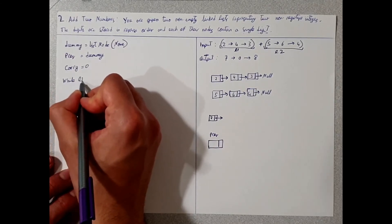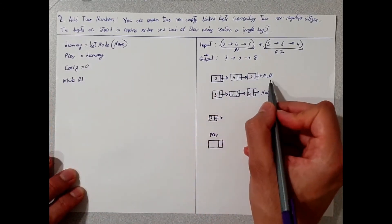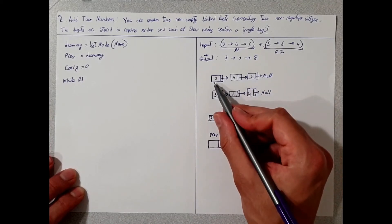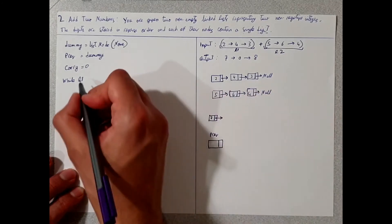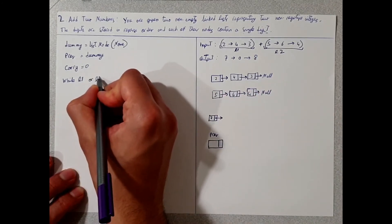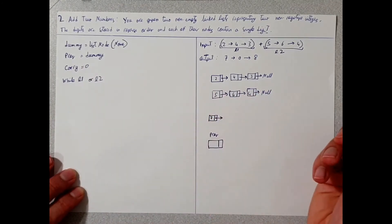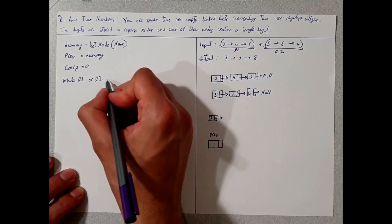And we can say while L1, so while there are values, if we're going to iterate on this, we want to iterate till we exhaust all the values. So while L1 or L2, so we also want to add all the values there, or carry.